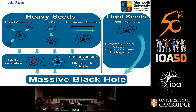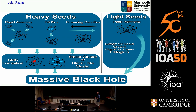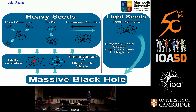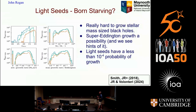On the other side, we have the heavy seeds. I would say the rapid assembly model — where galaxies grow really quickly — is the one I favor at the moment. That can lead to either supermassive star formation or maybe just a dense environment allowing heavy seeds to form and grow. That's kind of where the field is at at the moment.